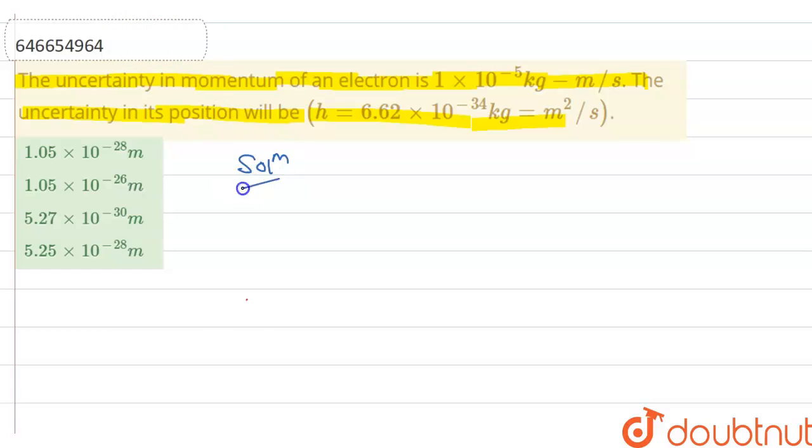Listen carefully. As we know that according to Heisenberg uncertainty principle, delta x dot delta p is equal to h upon 4 pi. Right?